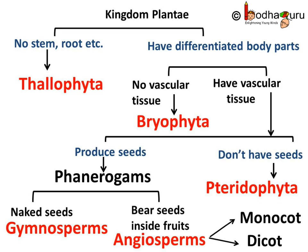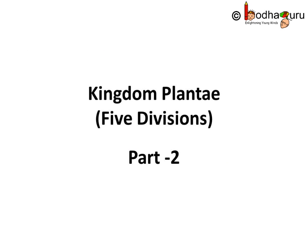So we see, it is a very structural approach. We went from very basic characteristics to more advanced characteristics, which are found in the more advanced plants. So, remember, the five divisions in the Plantae Kingdom are Thallophyta, Bryophyta, Pteridophyta, Gymnosperm, and Angiosperm. That's all for now. Bye-bye.